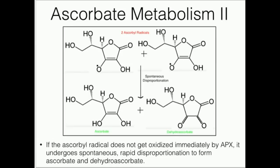Here's more on ascorbate metabolism. If the ascorbal radical does not get immediately oxidized by ascorbate peroxidase — meaning if you let two of these sit for even a short length of time — they can actually spontaneously undergo disproportionation with each other. A disproportionation is when two molecules of generally the same type react with each other, where one gets oxidized and one gets reduced. If you have two ascorbate radicals, one might donate its electron to the other, in which case you get ascorbate and dehydroascorbate. This is a non-enzymatic reaction that spontaneously can happen.